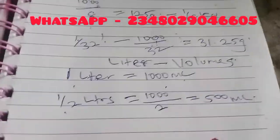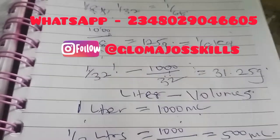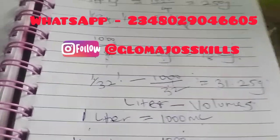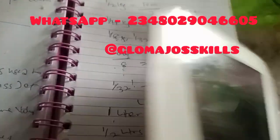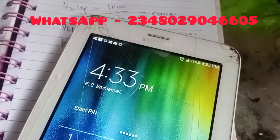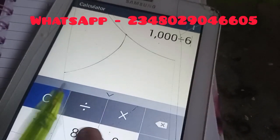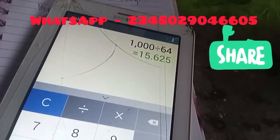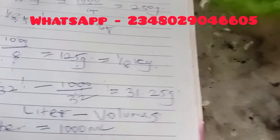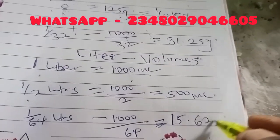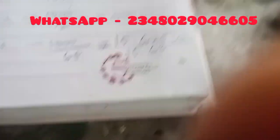The same thing we did for kg applies for liters. If the fragrance is one-sixty-fourth liter, divide 1000 by 64, because one liter equals 1000 ml. Using a calculator: 1000 divided by 64 equals 15.625 ml, which is approximately 15.63 ml. It is very straightforward.